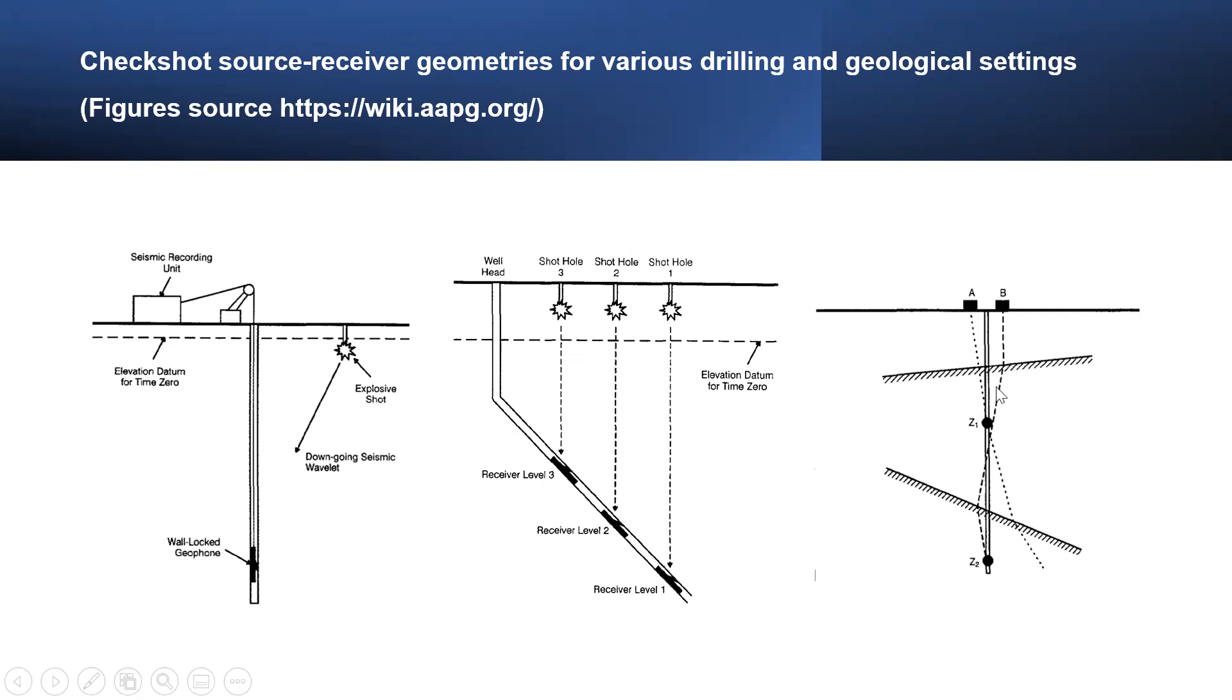The third figure shows that source position A or B should be chosen so the travel path to each receiver is as nearly vertical as possible. When a CheckShot survey well penetrates formations that exhibit complicated structural dips, it is advisable to position an energy source on both the updip and downdip sides of the well so that two different travel time measurements are acquired at each receiver depth.